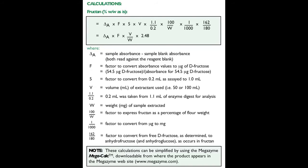The calculations associated with the measurement of fructose are shown in the slide. The factor delta A is the sample absorbance value minus the sample blank absorbance value, both read against the reagent blank. F is a factor to convert from absorbance values to micrograms of D-fructose, or it equals 54.5, which is the micrograms of D-fructose used, divided by the absorbance for that 54.5 micrograms of D-fructose in the PAHBAH reaction.